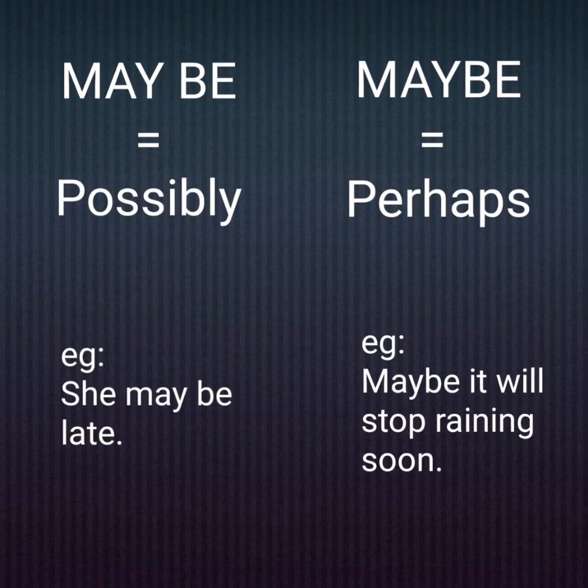Always remember: 'may be' means possibly, and 'maybe' means perhaps. For example: 'She may be late' — it is possible that she can be late. And for 'maybe' as an adverb: 'Maybe it will stop raining soon' — I can even say 'perhaps it will stop raining soon' because I'm not sure.